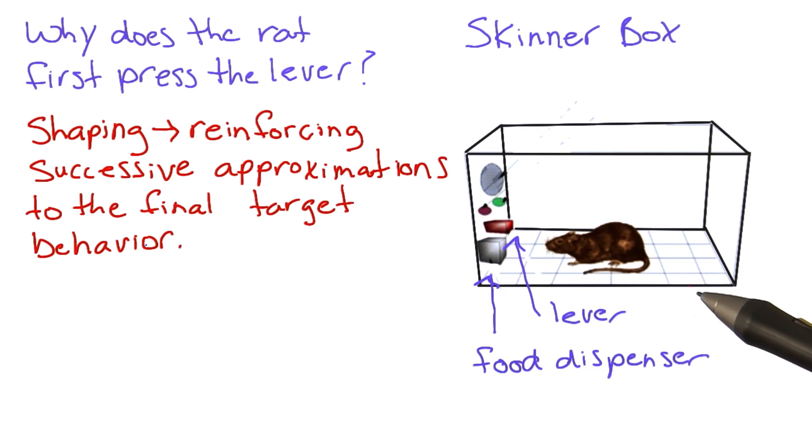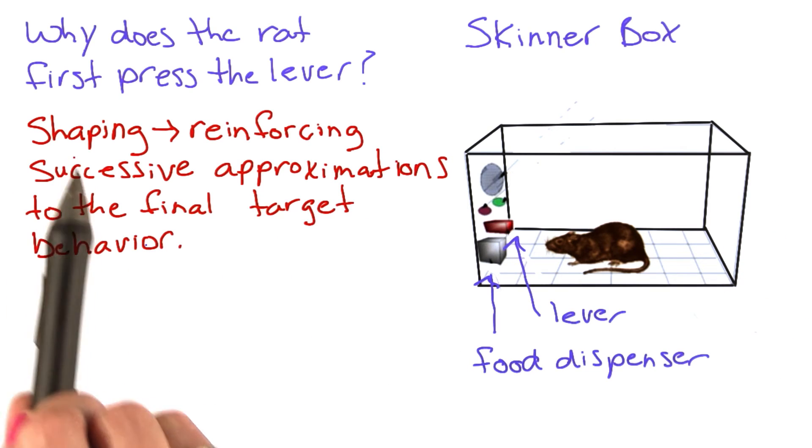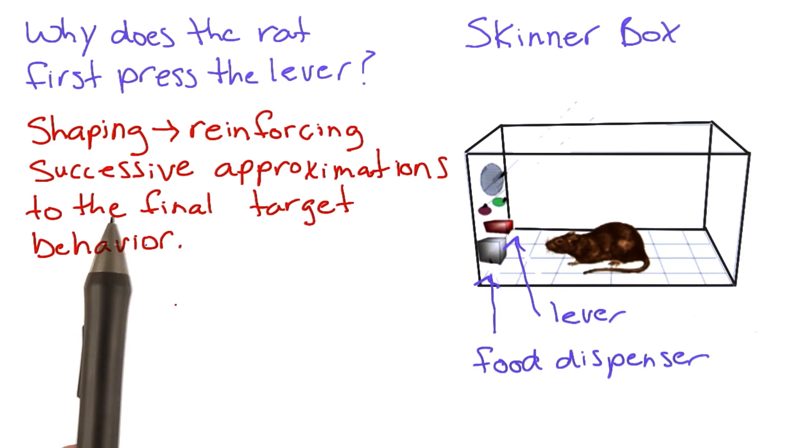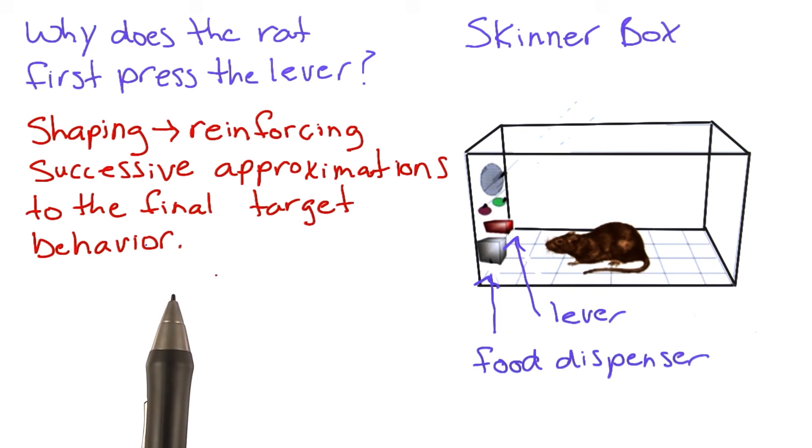We can get the rat to press the lever through the process of shaping. Shaping is reinforcing successive approximations to the final target behavior.